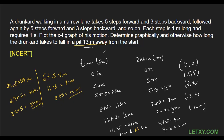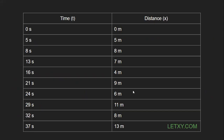We found the answer algebraically. Now we have to find the same answer by plotting this on a graph. The complete list of coordinates is: (0,0), (5,5), (8,2), (13,7), (16,4), (21,9), (24,6), (29,11), (32,8), and (37,13). I have already plotted these coordinates on the graph.